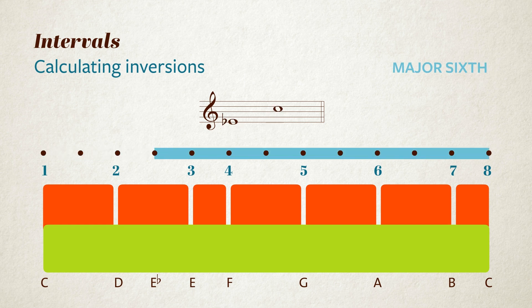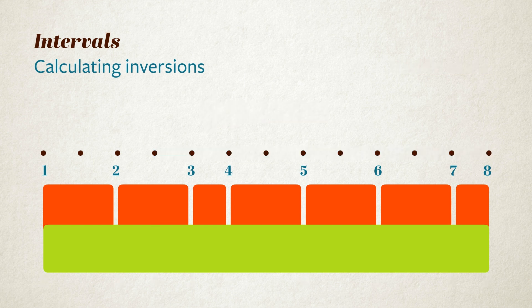The other thing worth noticing is that any interval and its inversion added together make nine. Two plus seven is nine. Three plus six is nine. Four plus five is nine. And so on. And I should mention that any interval and its inversion together make an octave. We already saw this with the tritone, and right at the start when we stacked a fifth and a fourth together.